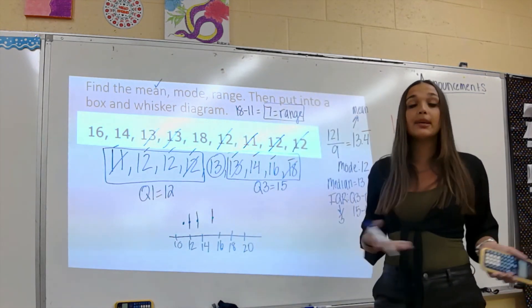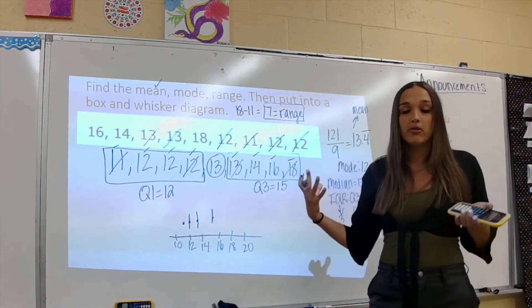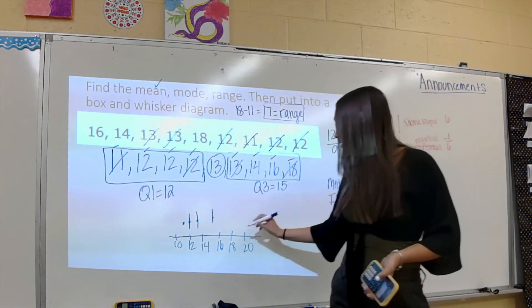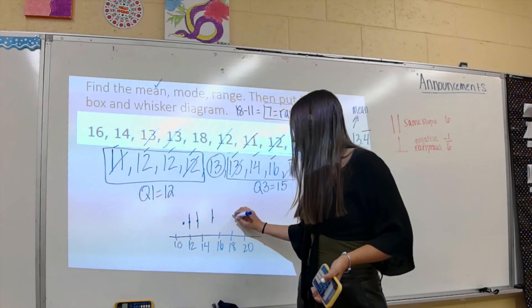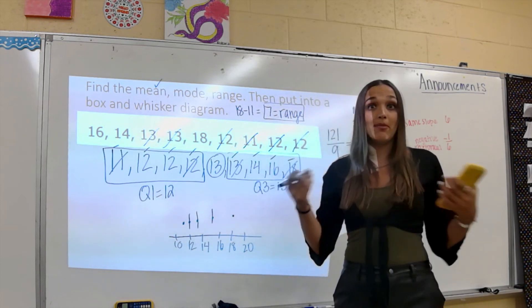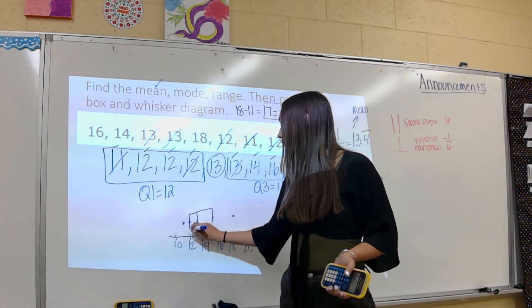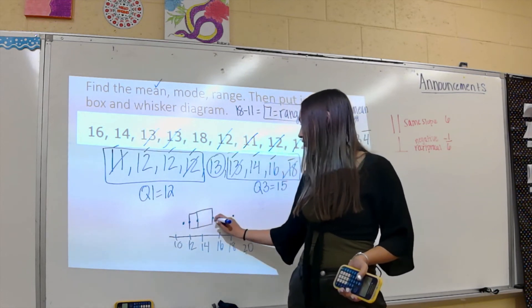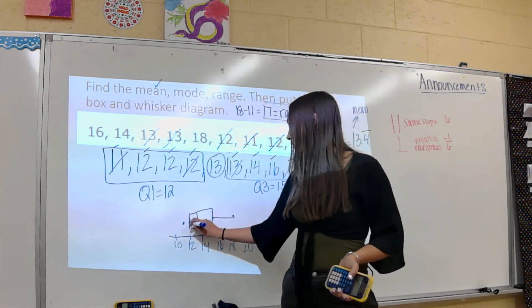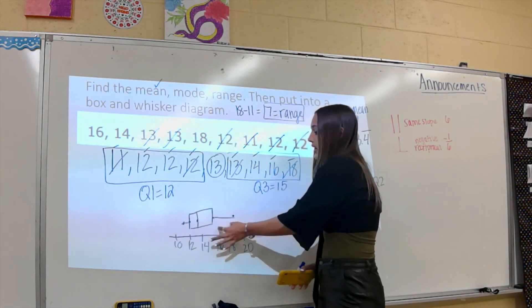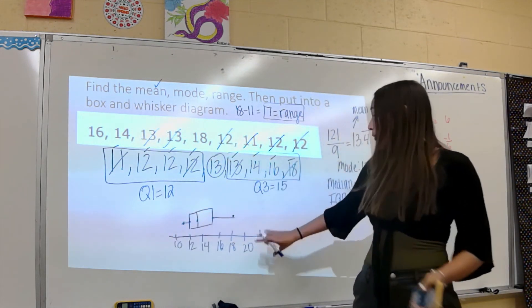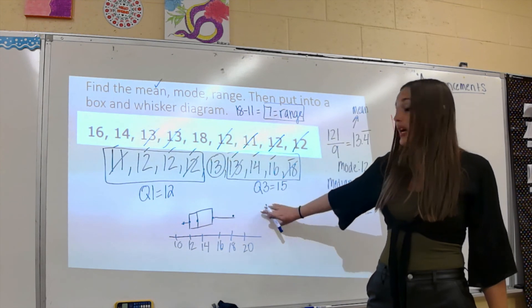And then last but not least, I put my maximum, which is my greatest value, which is 18. I put a dot there. Now I'm going to create my box and my whiskers. So my box, I just connect these. My whiskers, I just draw the line. We have less whisker on this side than this side, and that's what our box and whisker diagram would look like.